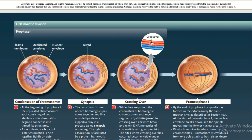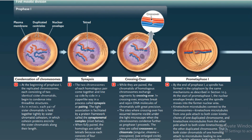Now let's look at the first meiotic division in detail. Step one is Prophase I. In Prophase I, the first step is condensation of chromosomes. At the beginning of Prophase I, the replicated chromosomes — each consisting of two identical sister chromatids — begin to condense into a thread-like structure. As in mitosis, each pair of sister chromatids is held together tightly by sister chromatid cohesion, in which cohesion proteins encircle the chromatids along their length.